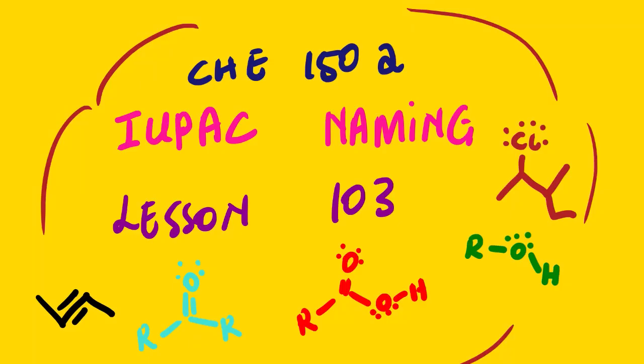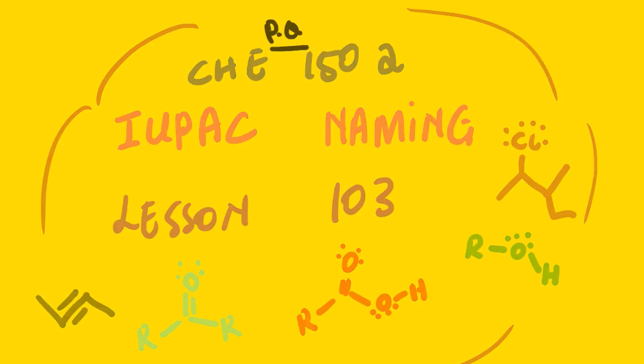Our lesson for today is Chemistry 502, and the topic is IUPAC naming, lesson 103. This lesson video is under the practice question lesson series, meaning we'll be looking at as many examples as we can. If we do not have enough examples due to the length of this video, we are going to have the next lesson video, lesson 104, which is the continuation of this.